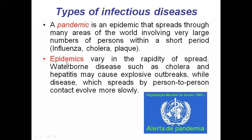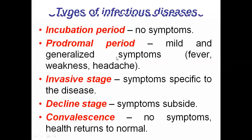Epidemics vary in the rapidity of spread. Waterborne diseases such as cholera and hepatitis can cause explosive outbreaks in a particular area. These diseases spread from one person to another, and that is called an epidemic. These are the types of diseases classified on the basis of their spreading pattern.